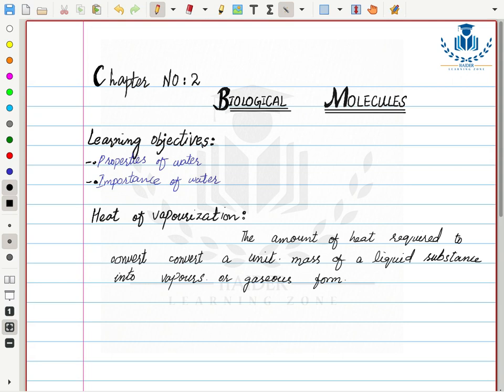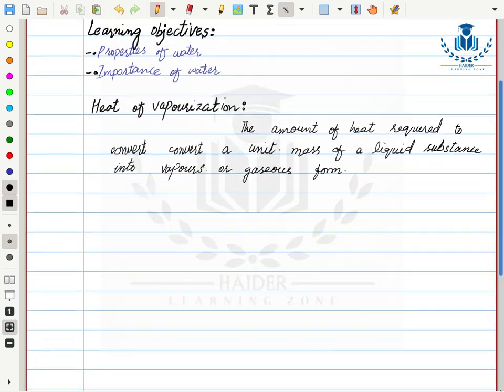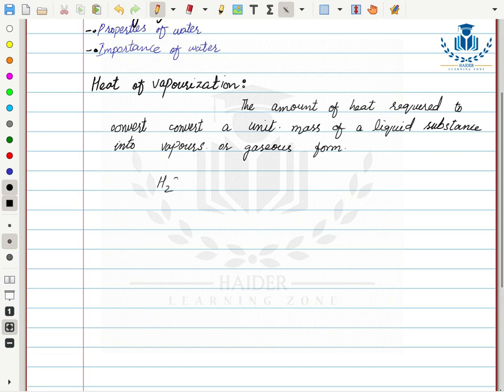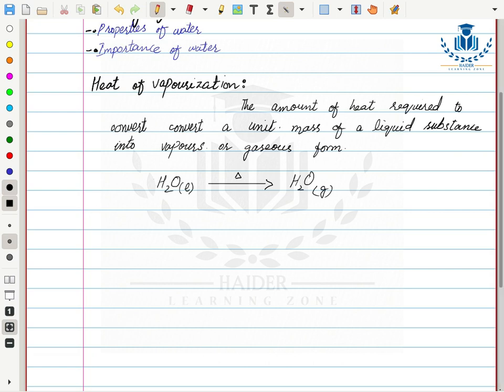Heat of vaporization is the amount of heat required to convert a unit mass of a liquid substance into vapor or gaseous form. If we have water in liquid state, we provide energy — heat — and water molecules will convert to gaseous state. That amount of heat is called heat of vaporization.